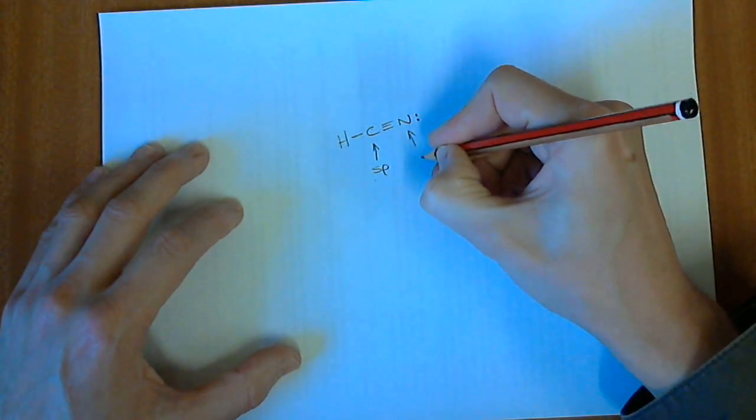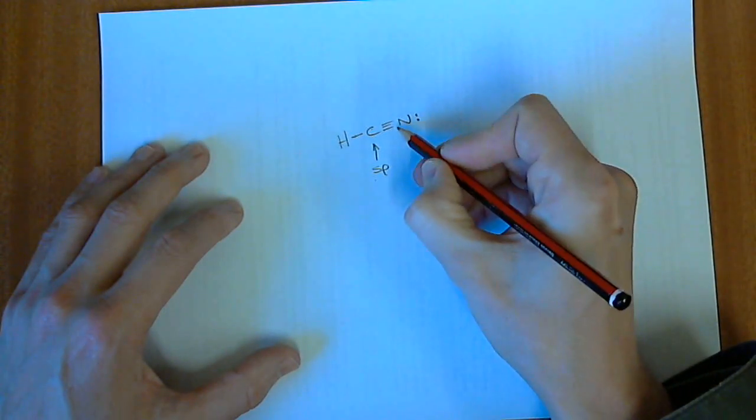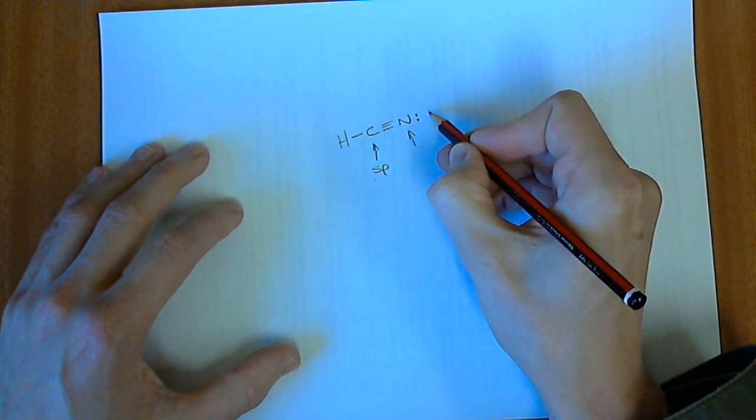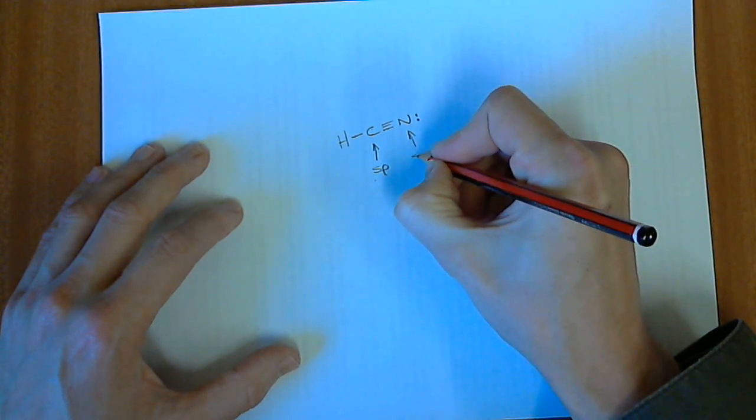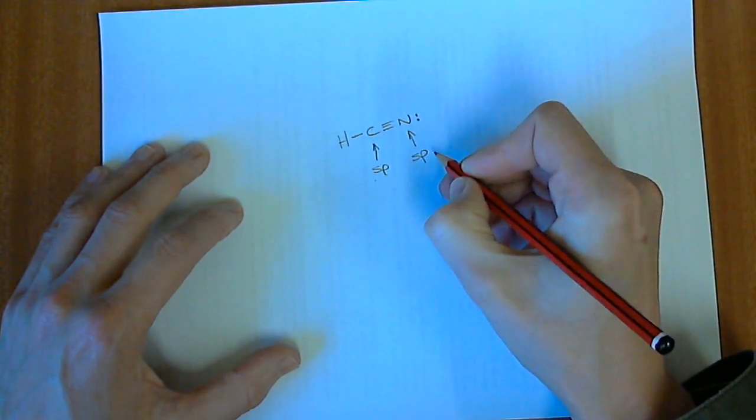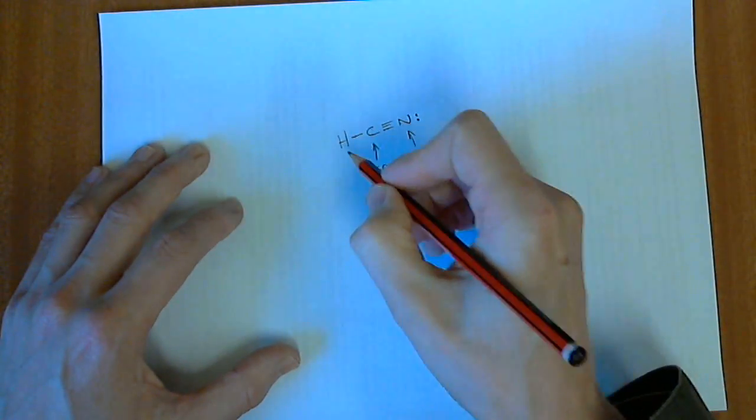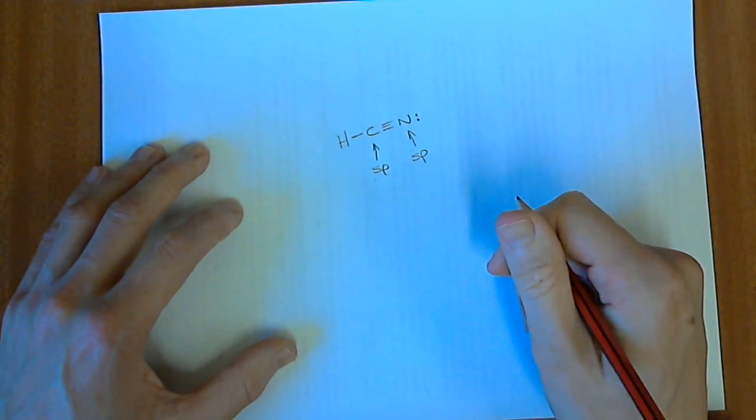And we can do exactly the same for the nitrogen. If we look at that, it's got one sigma bond going to the carbon and one lone pair of electrons, and so it must also be SP hybridized, and therefore also linear.